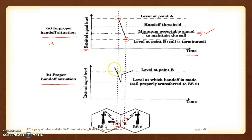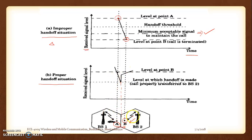In the proper handoff, the signal is also coming down, but this margin region is the boundary between the two cells. When the mobile is at the margin, the threshold level is set properly, so at that position the call quality goes up because the received signal is now being handled by base station 2. When the user reaches B, they receive proper communication from base station 2 — the connection from A has been terminated and B is now connected to base station 2. This is what we call proper handoff versus improper handoff.